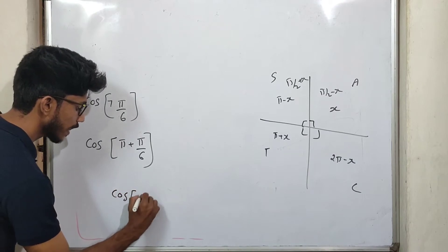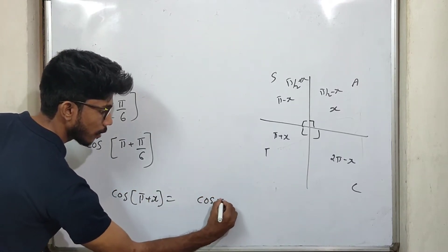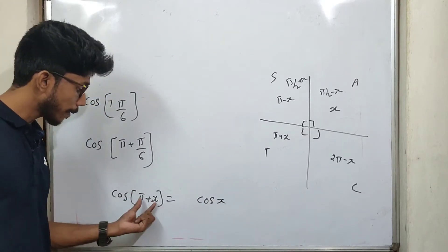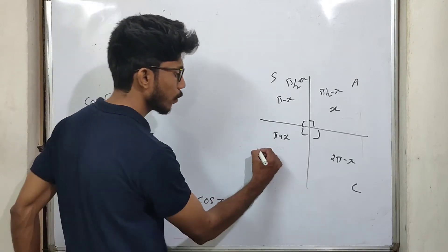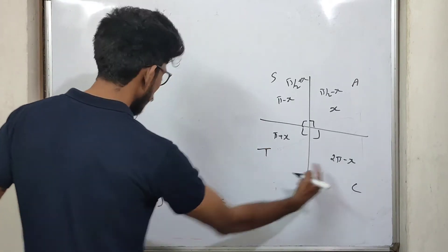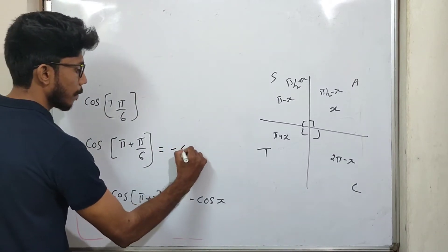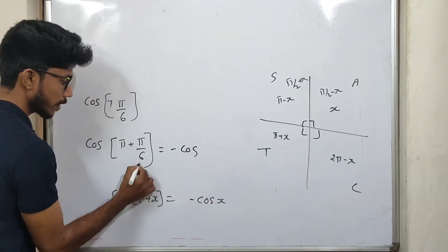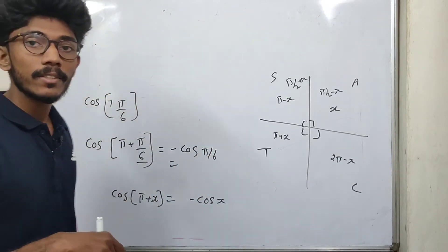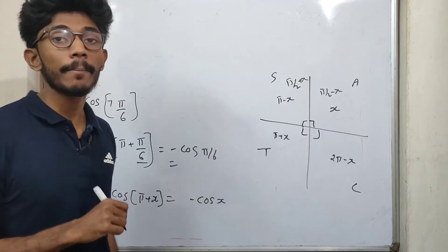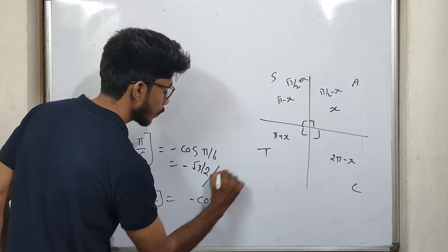Now, if I have a term of cos, it is 5π plus x. The answer is cos x, which can be positive or negative. If we have 3π plus x, we will get that result. Cos(3π/2 minus x) — we will learn the trigonometric ratios.